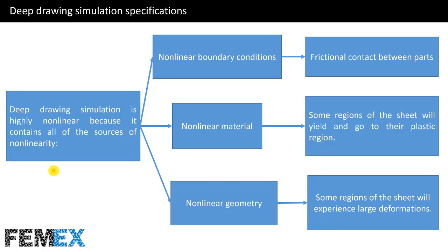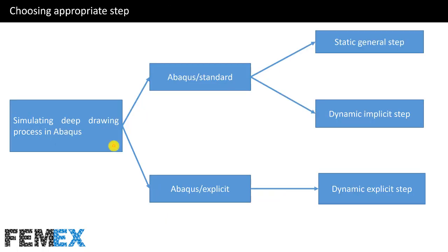Now I want to talk about the deep drawing simulation specifications. Deep drawing simulation is highly nonlinear because it contains all of the sources of nonlinearity. In this simulation we have nonlinear boundary conditions, for example frictional contact between parts. We have nonlinear material — in the process some regions of the sheet will yield and go to the plastic region. And we have nonlinear geometry because some regions of the sheet will experience large deformation.